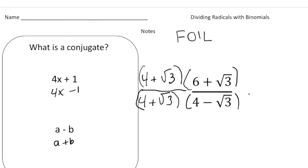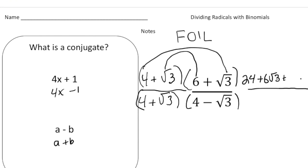Let's first start with the numerator. So when I do FOIL, 4 times 6 is 24, plus 6 radical 3, plus 4 radical 3 — and that's nice because we're going to be able to add those together. And then finally the last two terms, the square root of 3 times square root of 3 is the square root of 9, which is just 3. So now simplifying: 24 plus 3 is 27, and 6 and 4 is 10, so plus 10 radical 3. That's our new numerator.